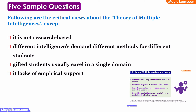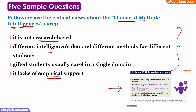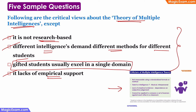Sample question: Following are the critical views about the theory of multiple intelligences except — that is, we have to identify which is not a criticism of the theory. This theory is not research-based and there is a lack of empirical support for some types of intelligence. Also, if there are different types of intelligences, then different teaching methods and assessment methods are needed for different students. Therefore, options one, two, and four are all criticisms of this theory, whereas the statement that gifted students usually excel in a single domain is not used for criticizing this theory. Therefore, option three is the correct answer.